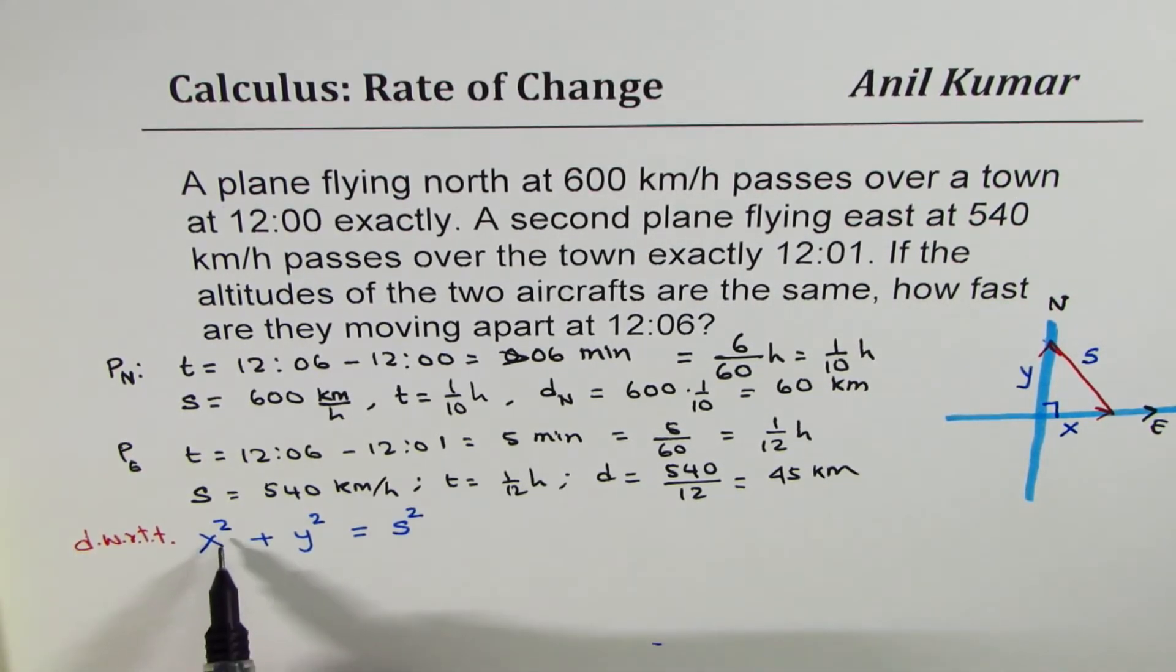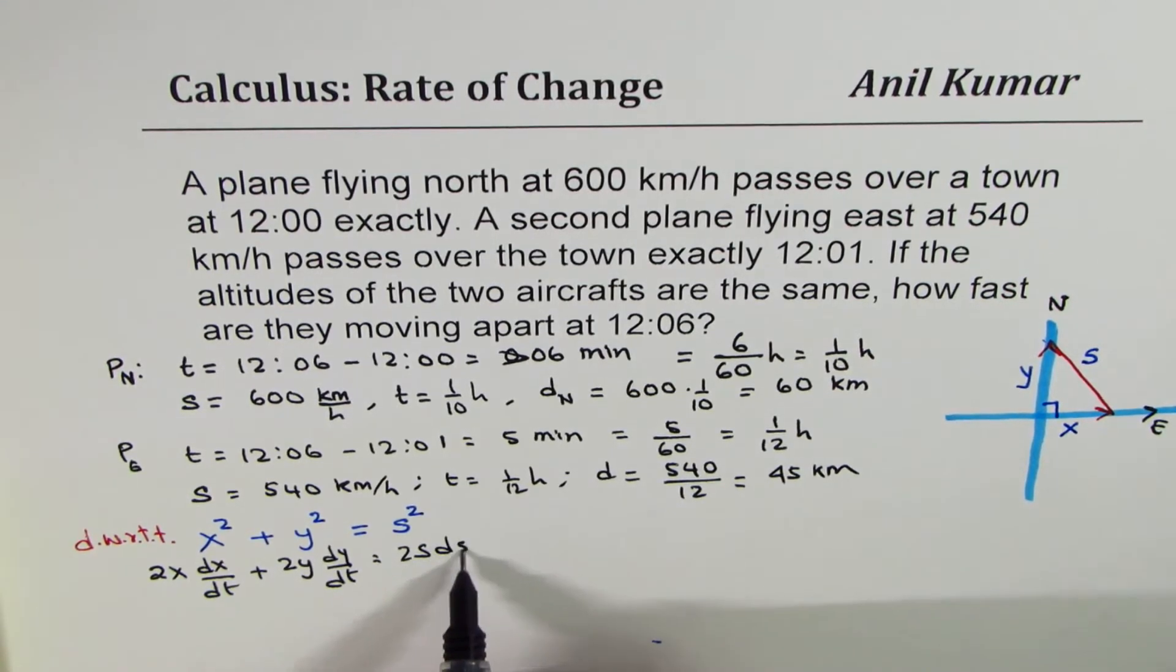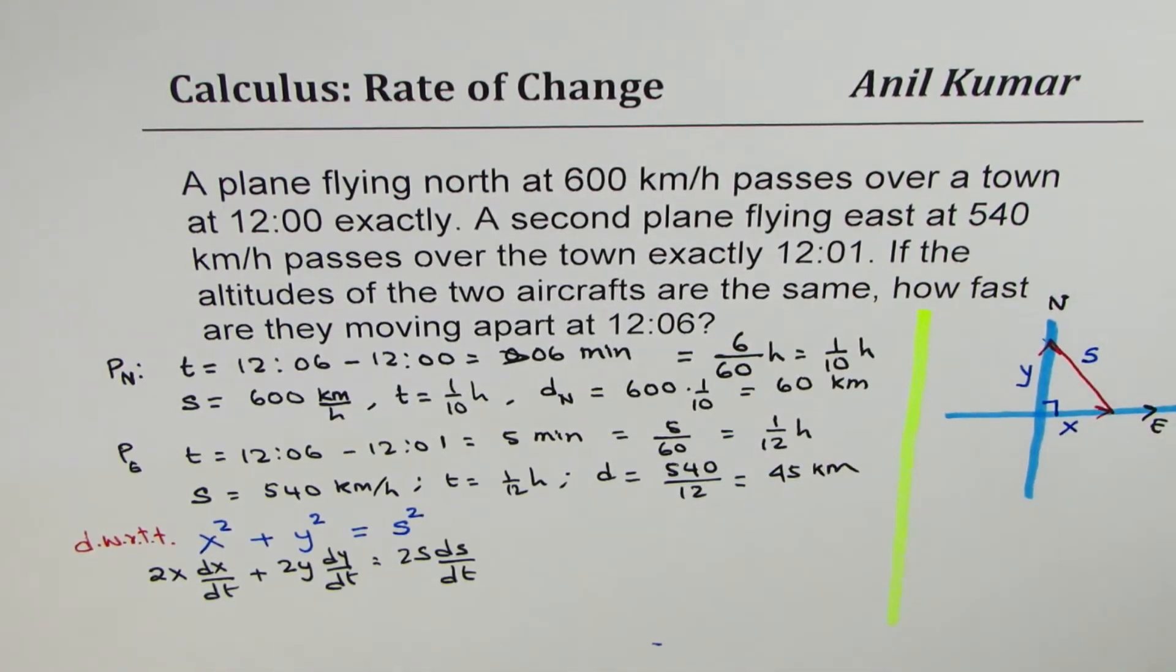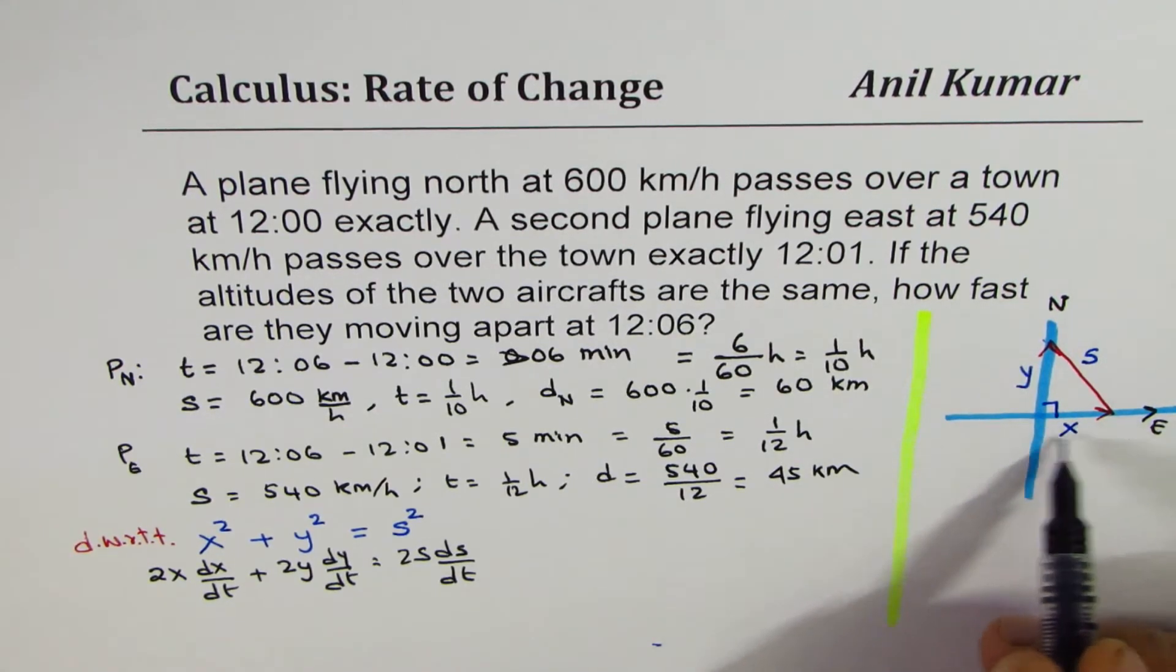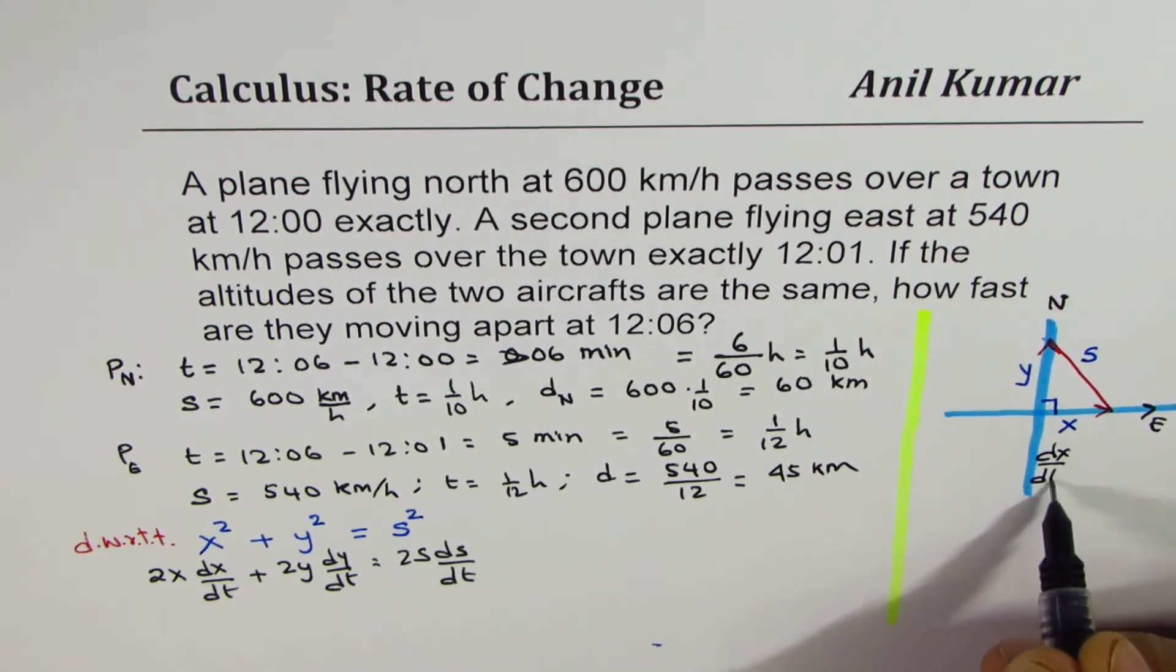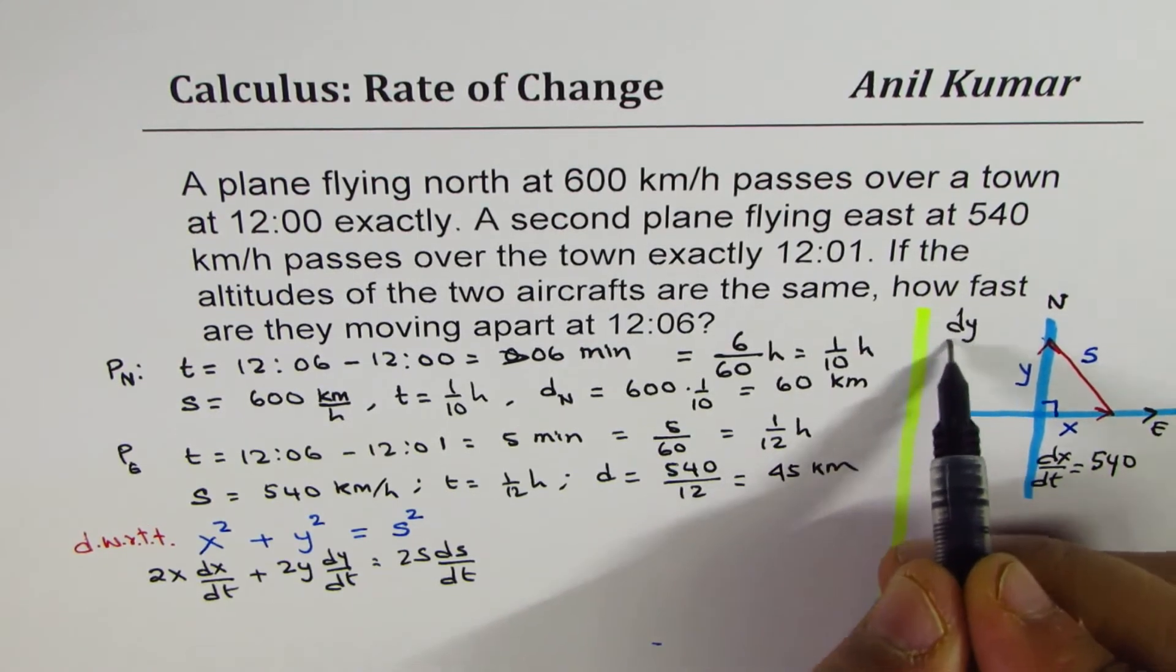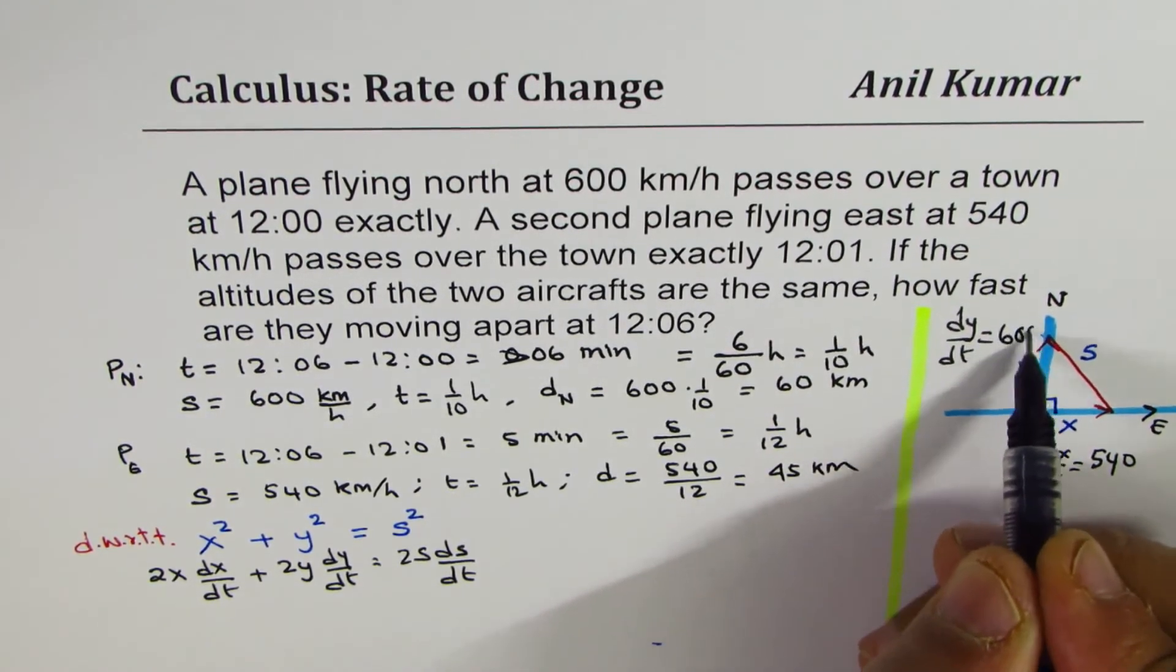I am skipping a step but writing the derivative straight away. We get 2X dx/dt plus 2Y dy/dt equals to 2S dS/dt. Now if you look at this equation carefully, you are given dx/dt, dy/dt, you have to find dS/dt. That is how we have to approach. As X is the distance towards the east, rate of change of this distance which is dx/dt is equal to speed of the plane which is 540. Y dy/dt is equal to speed of the plane going north which is 600. So we know these two quantities.